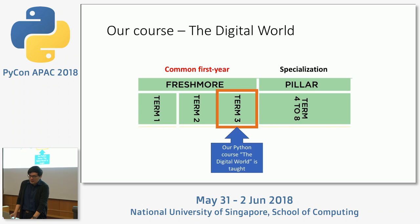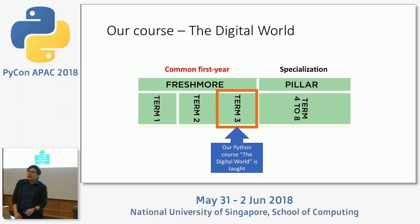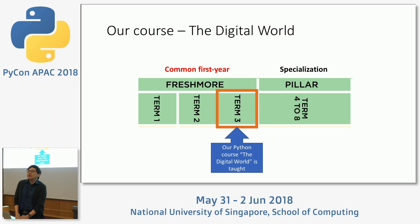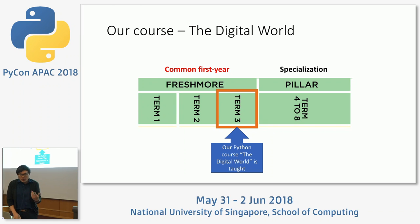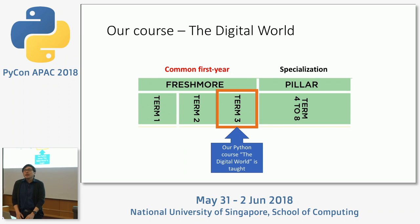Let me give you an introduction to our Digital World course. SUTD has a different curriculum. In the first year, when students join us, for the three terms it's a common first year, and they do maths, physics, and humanities subjects. The computing course comes in the third term of the common first year. After that, they choose a specialization for the remaining five terms.